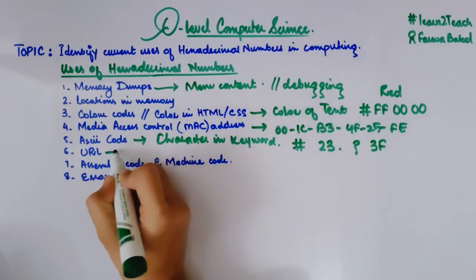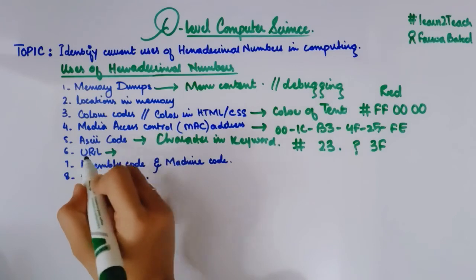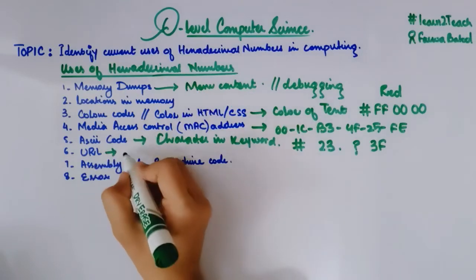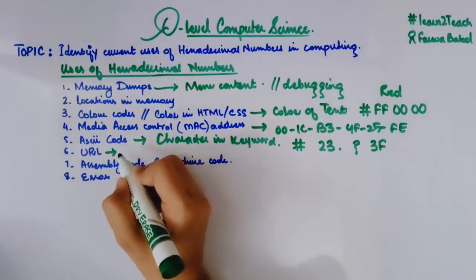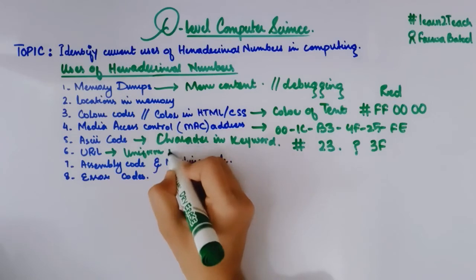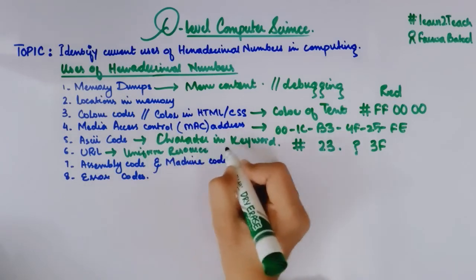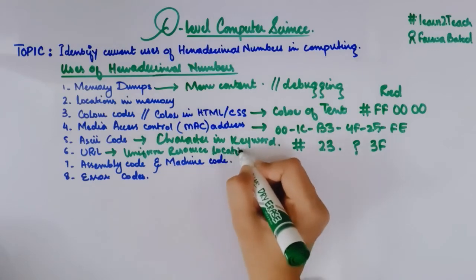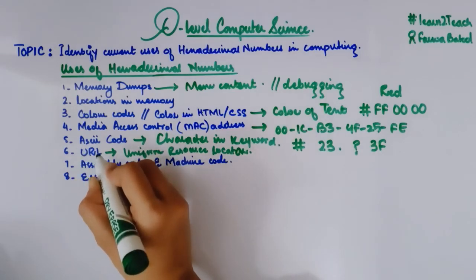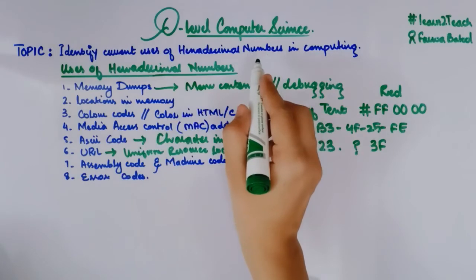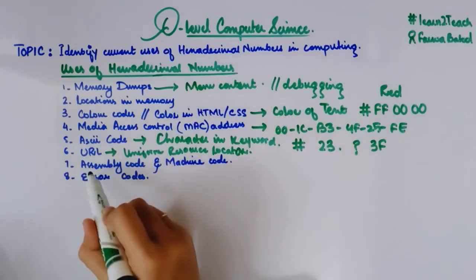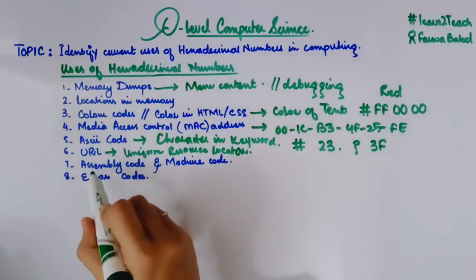Then we have URLs. What are URLs? These are basically part of web addresses. In order to locate a website, we use a URL — the uniform resource locator — which is used to locate a website on the internet. URLs are also represented in the form of hexadecimal numbers, and I will explain this in more detail in a separate video. The seventh use is assembly code and machine code.